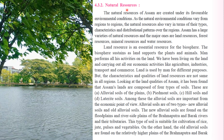The natural resources of Assam are created under its favorable environmental conditions. As natural environmental conditions vary from region to region, the natural resources also vary in terms of their types, characteristics, and distributional patterns. Assam has a large variety of natural resources, and the major ones are land resource, forest resource, mineral resource, and water resource.